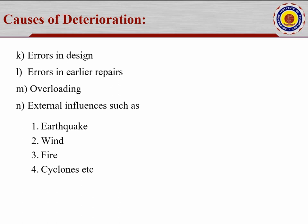Overloading, and external influences such as earthquake, wind, fire, and cyclone — these are not in our hands. Earthquake depends on the Richter scale; wind depends on kilometers per hour or meters per second. As per IS 875 Part 3, the maximum is 55 meters per second in India, whereas sometimes 60 meters per second may be felt. Fire accidents and cyclones also cannot be controlled.